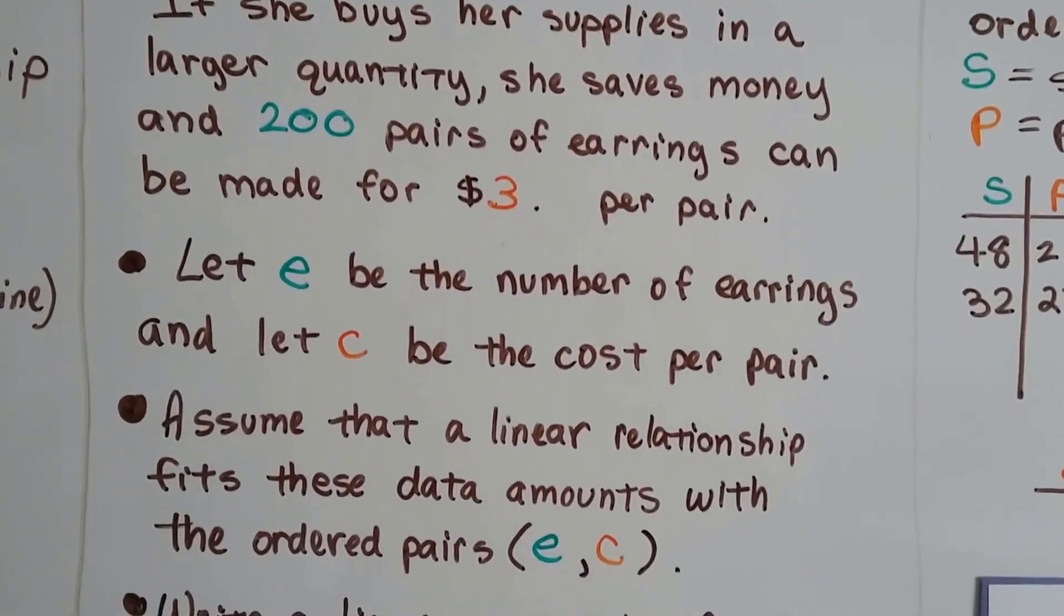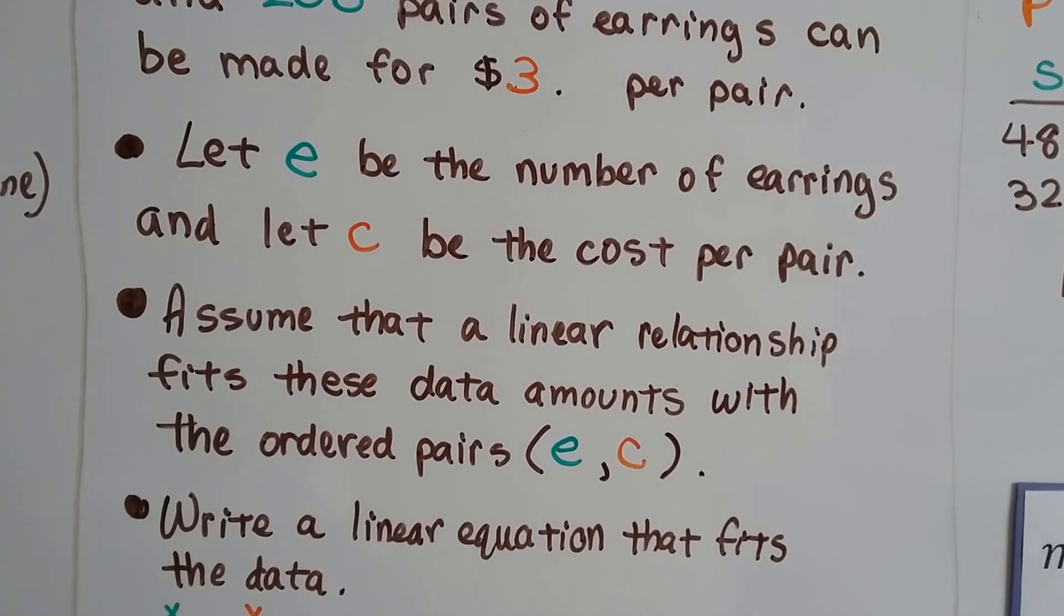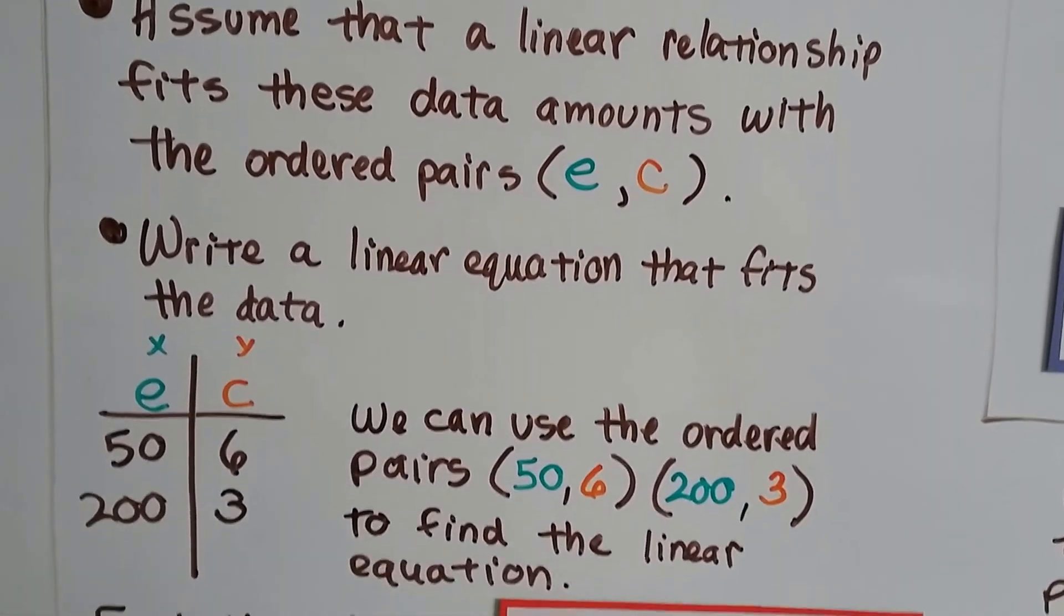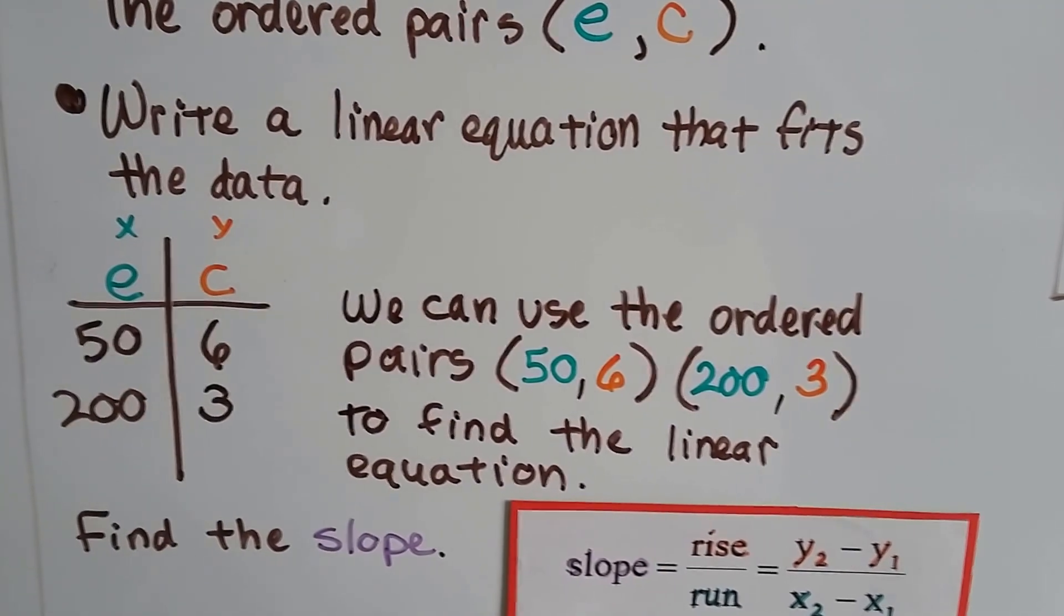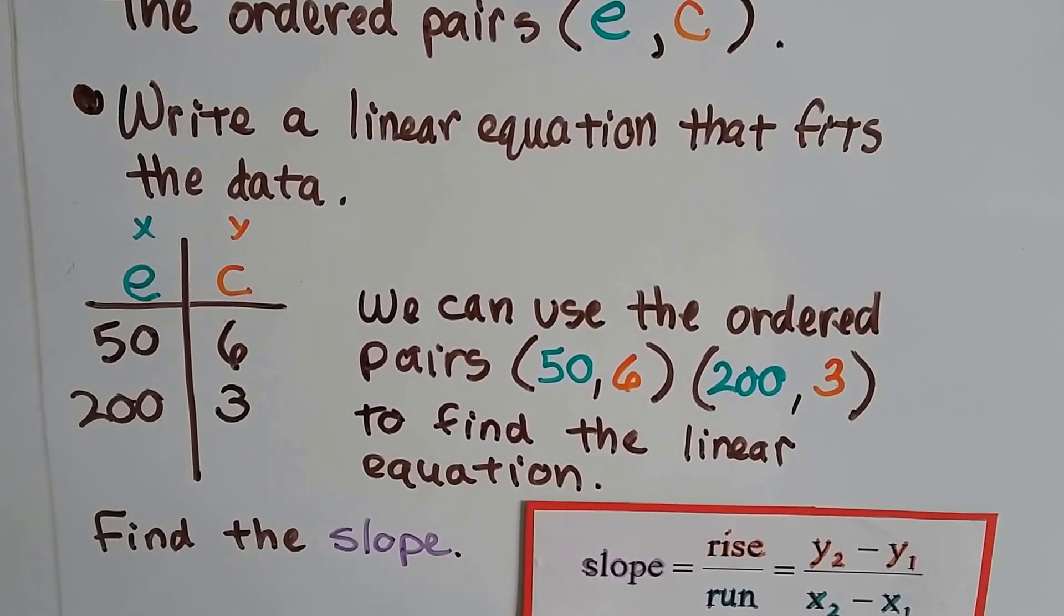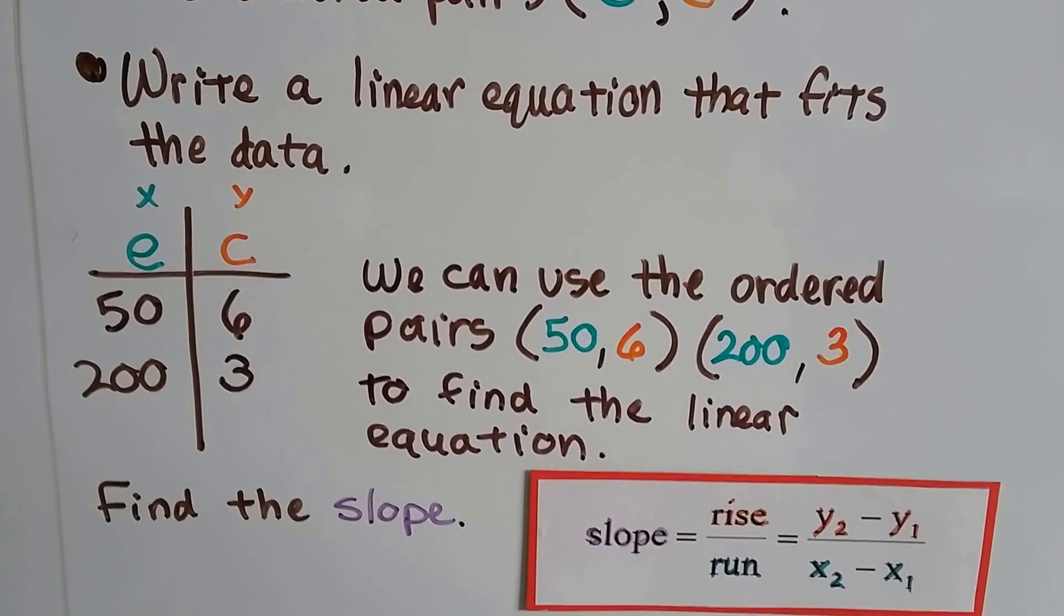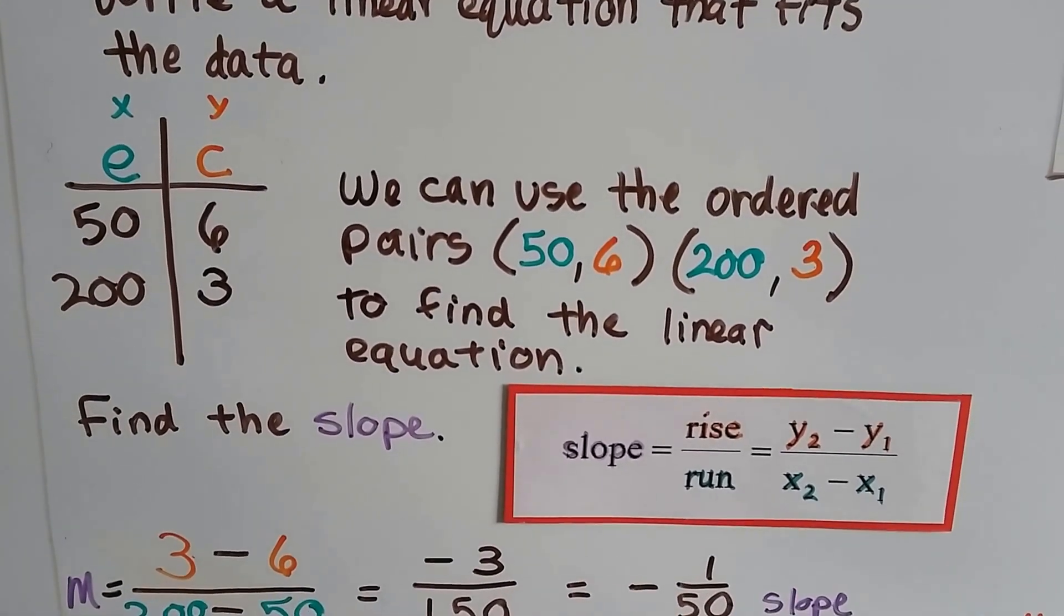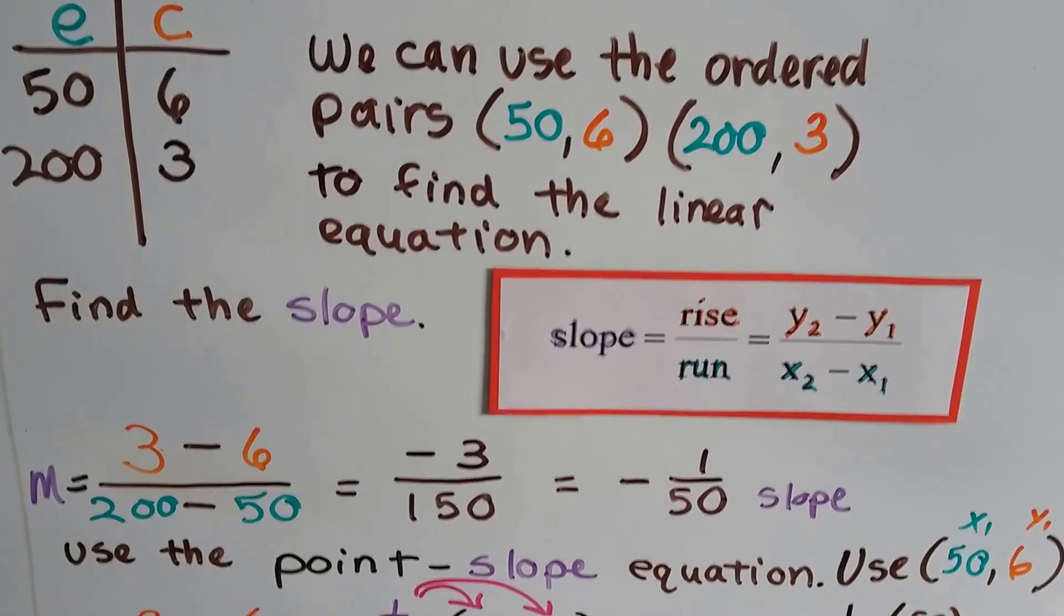We're going to assume that a linear relationship fits these data amounts. So our ordered pairs are going to be e, c for x, y. We can write a linear equation that fits the data. So e is x, c is y, and we end up with 50 pairs for $6 and 200 pairs for $3 in our function table there on the left. And we can use the ordered pairs 50 comma 6 and 200 comma 3 as our x1, y1, x2, y2. We can find a linear equation.